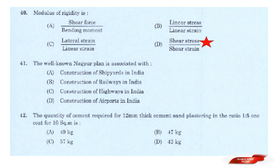Question: The well-known Nagpur Plan is associated with? Options: Construction of shipyard in India; Construction of railways in India; Construction of highways in India; Construction of airports in India. Answer: Option C — Construction of highways in India.